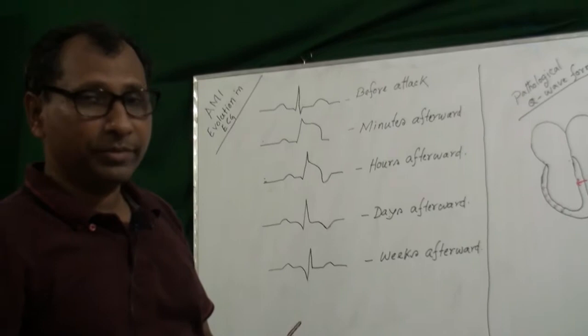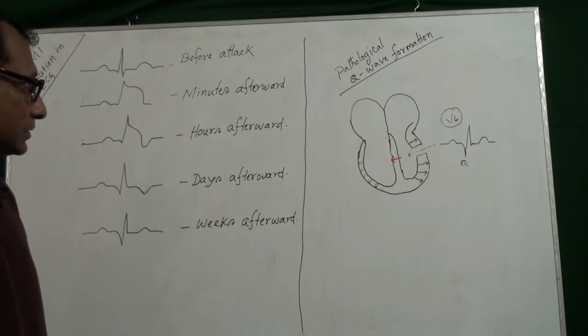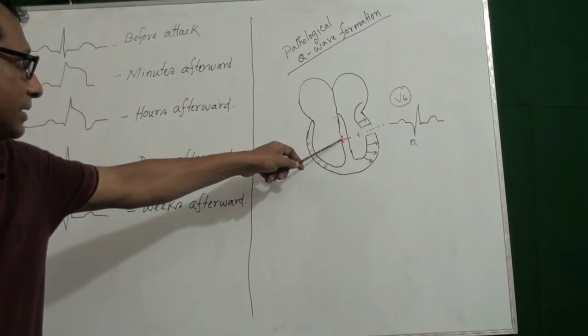This portion is infarcted area. It is electrically neutral. So in this phase, the chest lead V5 or V6 faces the septal activations.